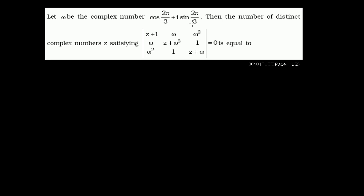Let omega be the complex number cosine of 2π/3 plus i sine of 2π/3. Then the number of distinct complex numbers z satisfying this determinant equaling 0. So we have this 3 by 3 determinant equaling 0. Let's evaluate this determinant and see if we can solve for z, or figure out how many complex numbers z satisfy this equation.